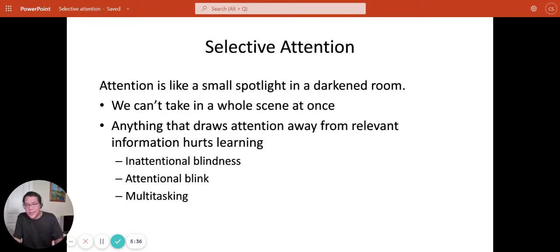There's a number of phenomena that have been studied related to selective attention which explain why it's such a challenge. Number one is inattentional blindness, where when we're distracted, we miss a huge amount of information. But we're not aware of all the information that we've missed.